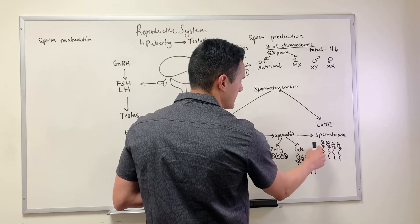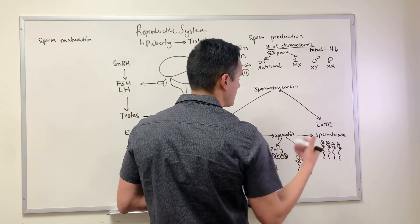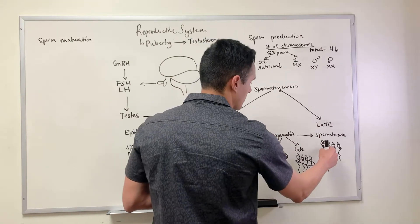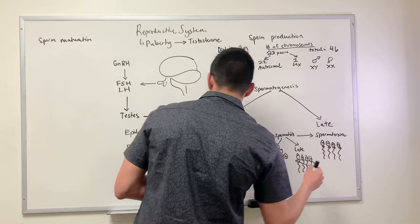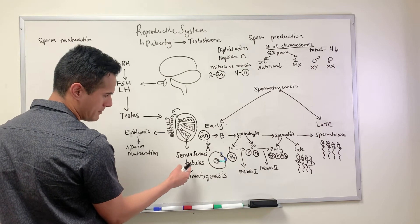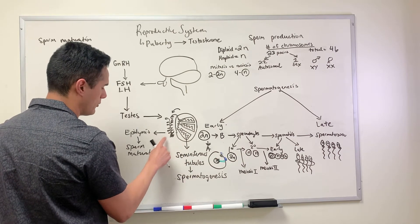This is the immature form and so it has to undergo some modifications so that it's a mature sperm. Now that they're all single entities here, they can travel from the seminiferous tubules into the epididymis for sperm maturation.